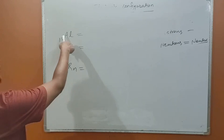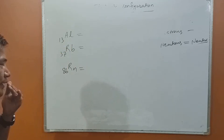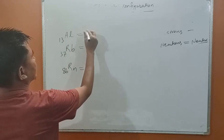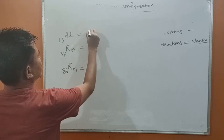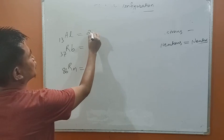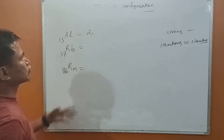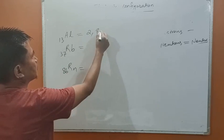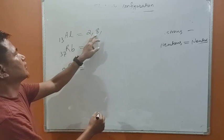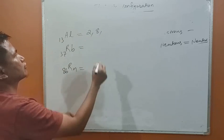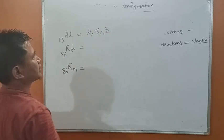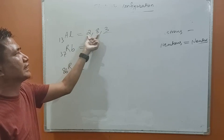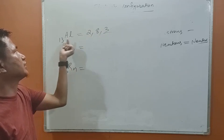Aluminium has atomic number 13, meaning there are 13 protons and so 13 electrons. The electronic distribution is 2 electrons in the first orbit, 8 in the second orbit — 2 plus 8 is 10 — and 3 remaining electrons in the outermost orbit. So the configuration is 2, 8, 3. And 10 plus 3 is 13.